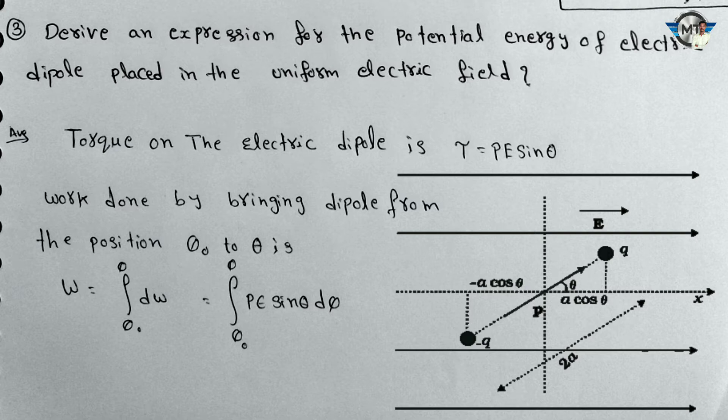We observe a diagram of a uniform electric field showing two charges — one positive charge and one negative charge — separated by distance 2a. Here we have minus q and positive charge, with an angle of theta. The torque on the electric dipole is tau is equal to pE sin theta.